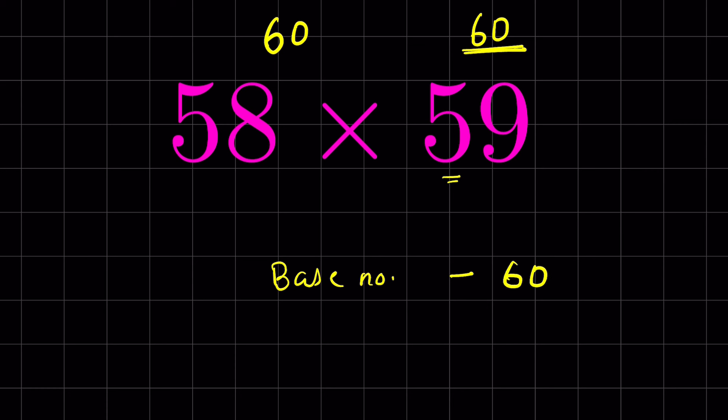Now 58 is how much less than 60? It's 2 less than 60, so we write negative 2. 59 is 1 less than 60, so we write negative 1. Now if you subtract 2 from 59 you get 57, or you subtract 1 from 58 you get 57. In both cases the result will be 57.